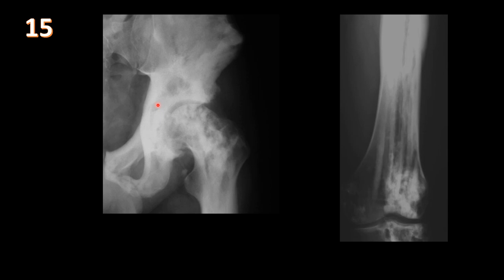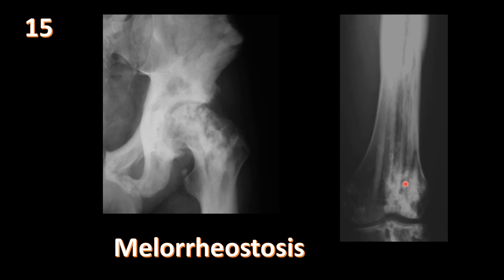AP views of the hip and femur show increased sclerosis throughout the left hemipelvis, proximal femur, femoral head, femoral neck, trochanters, and distal femur, with a candle-wax dripping configuration along the cortex. This is melorheostosis — nothing else looks quite like it. Key features: candle-wax dripping appearance, usually unilateral, occurring in a dermatomal distribution.